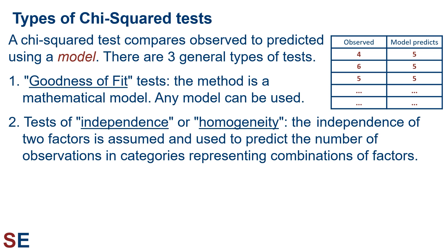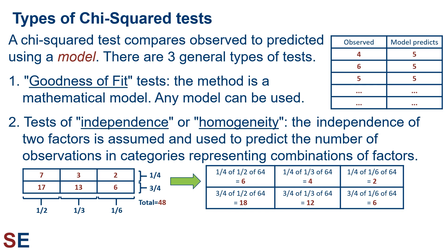Second, there are also tests of independence or homogeneity. These are also a mathematical model, but a specific one in which the independence of two factors is assumed and then used to predict the number of observations in categories representing combinations of factors. Mathematically, these two are the same, but their experimental design differs and the interpretation is slightly different. For these tests, we would usually arrange our observations in a grid with the rows representing one factor and the columns representing another. We then use the proportions of observed values in each row and column to make predictions about what we would expect those values to be if the rows and columns were independent. For example, the upper left box is in a row that has one-fourth of the overall values and a column that has one-half of the overall values, so we would expect that, if things were independent, it should have one-fourth of one-half of the total number of 48 observations. This number is 6, but it actually has 7, so we can see a little mismatch already.